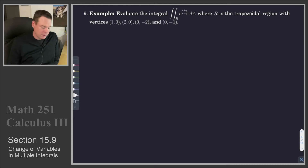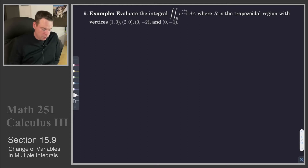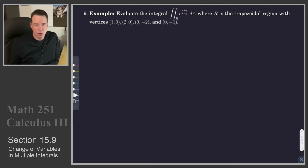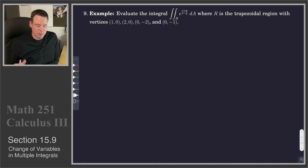Now we'll go through this example which we've touched upon elements of. We have already looked at the trapezoidal region, we've looked at a change of variables which maps it into another region that's a little bit more easy to deal with. But we're going to put all of these elements together now.